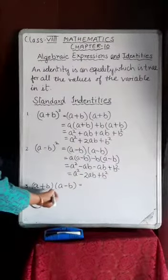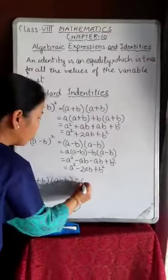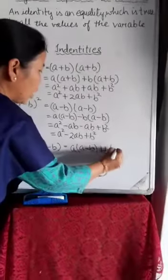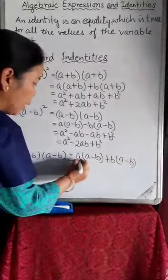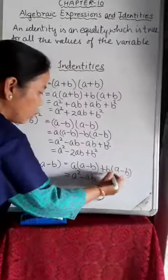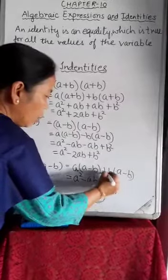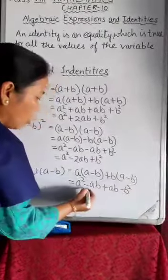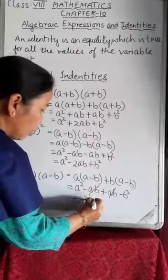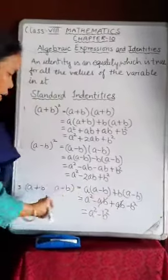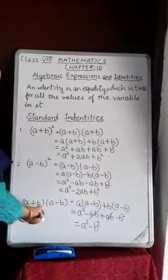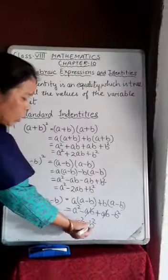The third identity is (a + b)(a − b). Expanding: a×a = a², a×b = −ab, b×a = +ab, b×b = −b². The terms +ab and −ab cancel each other, leaving a² − b². So (a + b)(a − b) = a² − b².